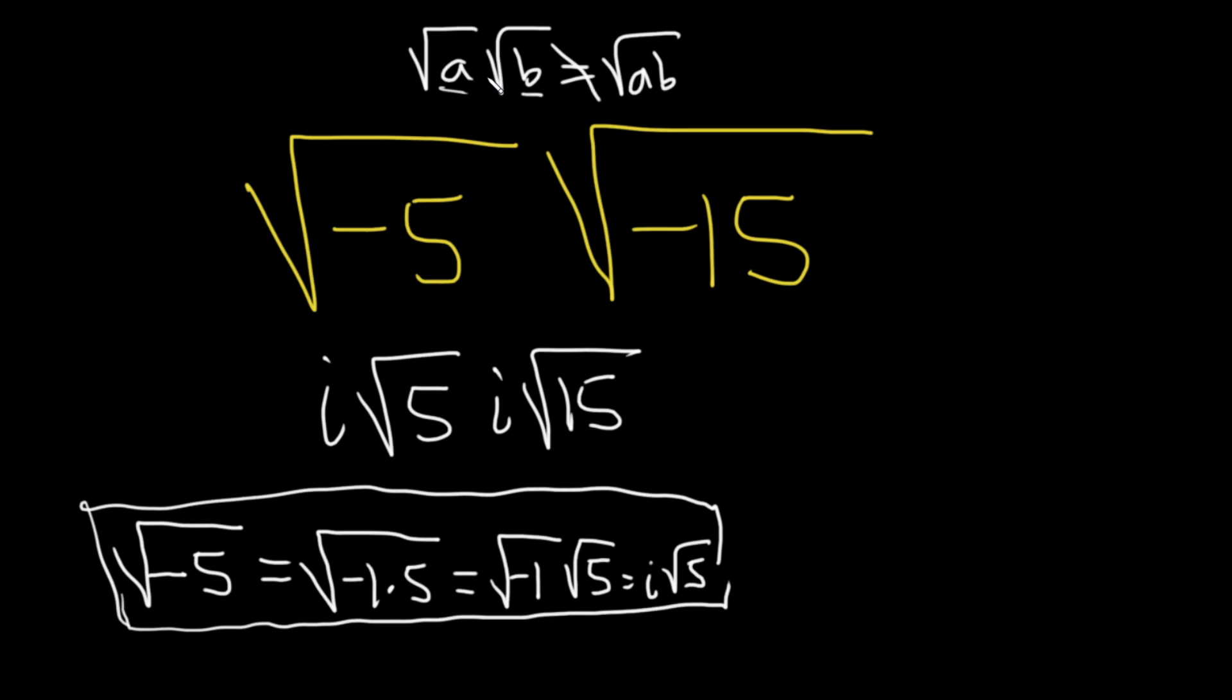So again, this rule does not always work. It only works, square root of a times square root of b is the square root of ab, if at least one of these is non-negative. So in this case, 5 was positive. In other words, it's not negative. So you can do the process. Now they're both positive, so we can perform the multiplication.